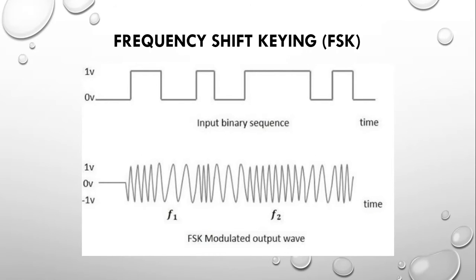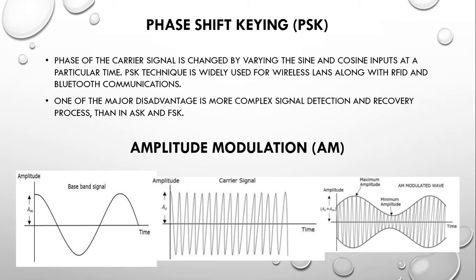Phase shift keying (PSK) changes the phase of the carrier signal by varying sine and cosine inputs at particular times. PSK is widely used for wireless LANs, RFID, and Bluetooth communication. One major disadvantage is a more complex signal detection and recovery process compared to ASK and FSK.